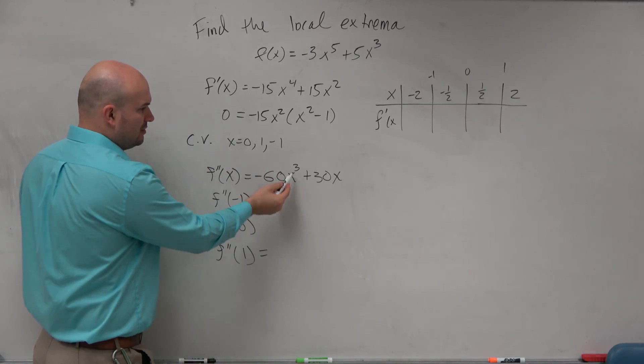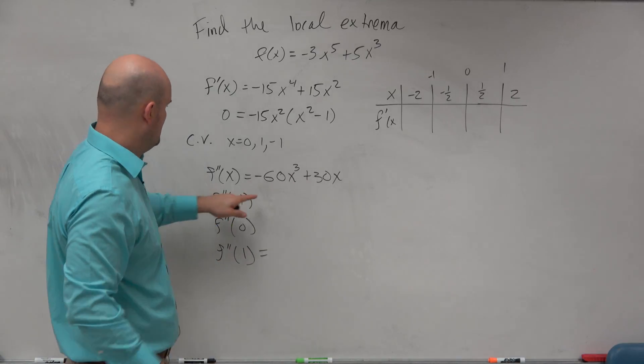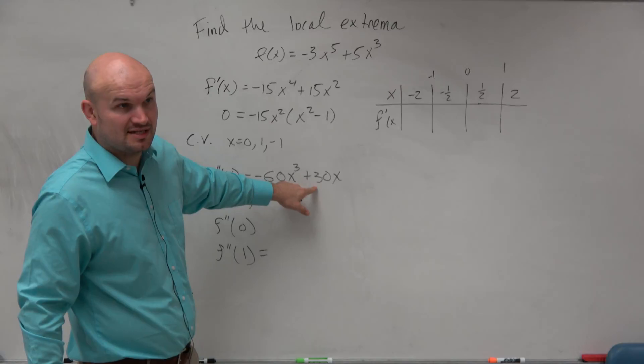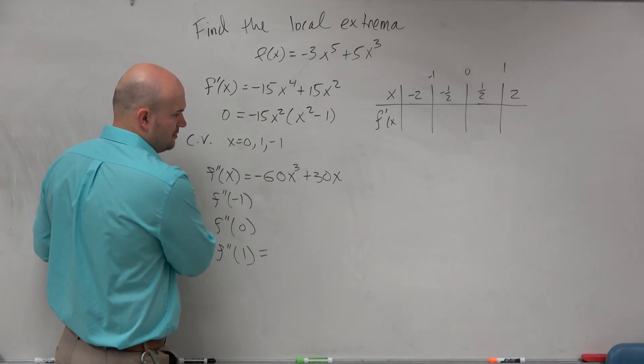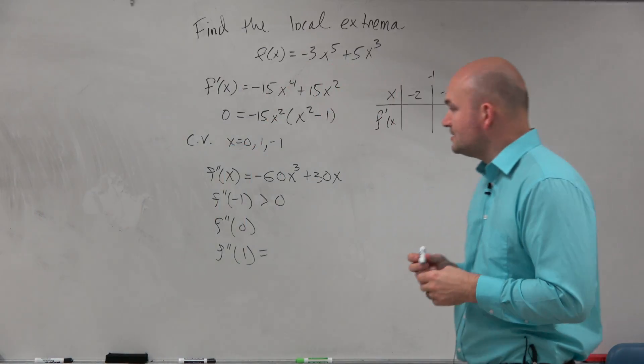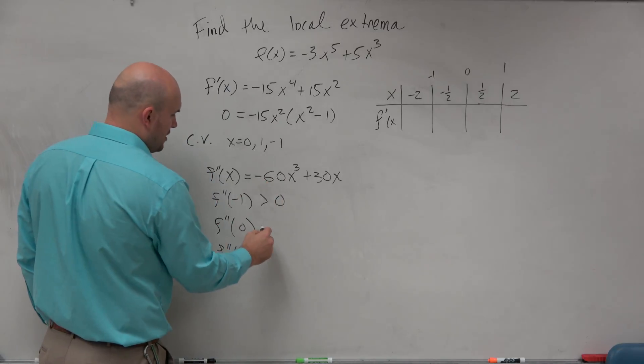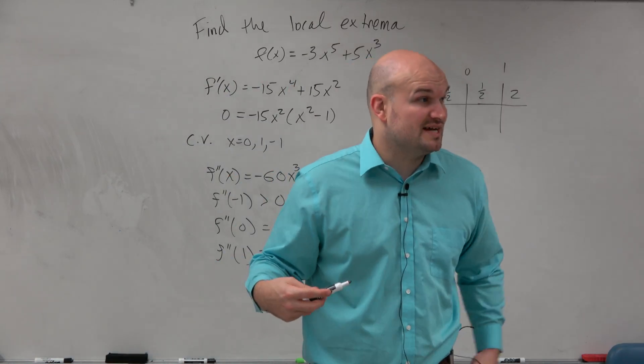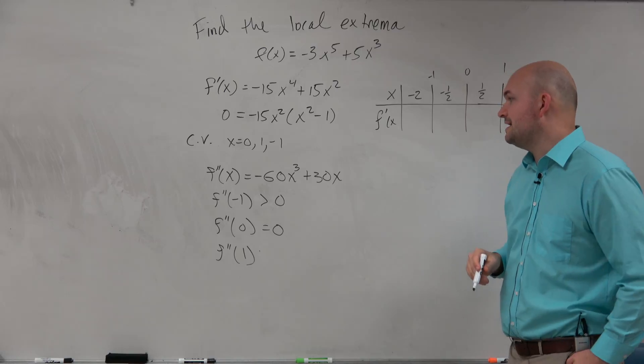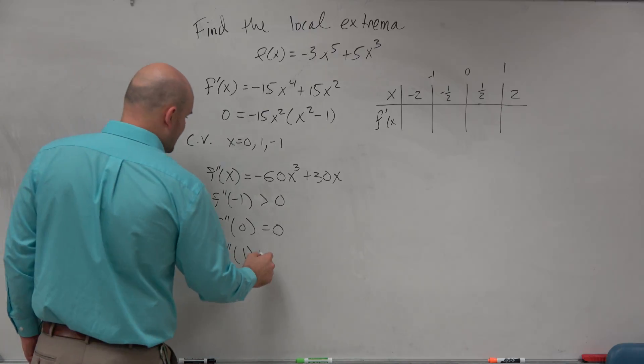If I plug in negative 1 into here, negative 1 cubed is negative times the negative is positive, so that becomes 60 plus negative 30, which is going to be positive. That's going to be greater than 0. Then let's check f double prime of 0. If we plug in 0 and 0, we're equal to 0. And remember by the second derivative test, if it's equal to 0, we've got to go back to the first derivative test. Then let's do f of 1. If I plug in 1 here, I get negative 60 plus 30, which is going to be less than 0.